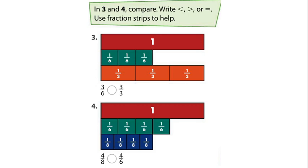In questions 3 and 4, compare — write less than, greater than, or equal. Use fraction strips to help. Question 3: is 3 over 6 less or greater than 3 over 3? Remember the rule — the fraction with the smaller denominator is the greater fraction, as long as both fractions have the same numerator. 3 over 3 has the smaller denominator, so 3 over 3 is the greater fraction, and 3 over 6 is less than 3 over 3. We can see that if we look at the strips.